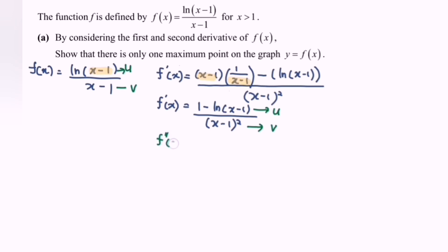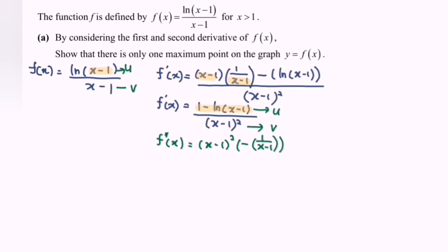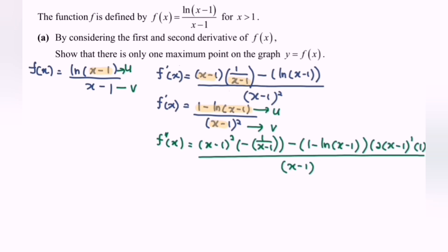So f''(x) equals v times u' — that is, (x-1)² multiplied by the derivative of [1 - ln(x-1)], which gives [0 - 1/(x-1)] times 1. Minus u times v', where u = 1 - ln(x-1) and v' = 2(x-1)¹ times 1. All over v² = (x-1)⁴.